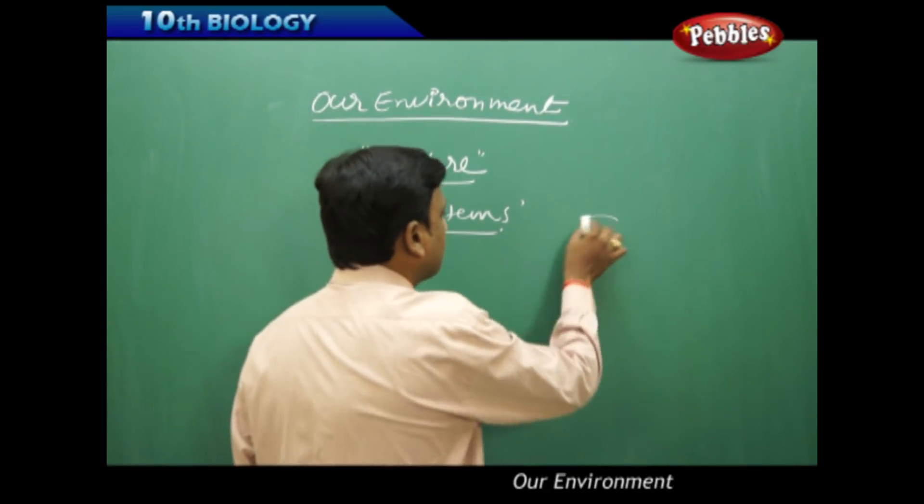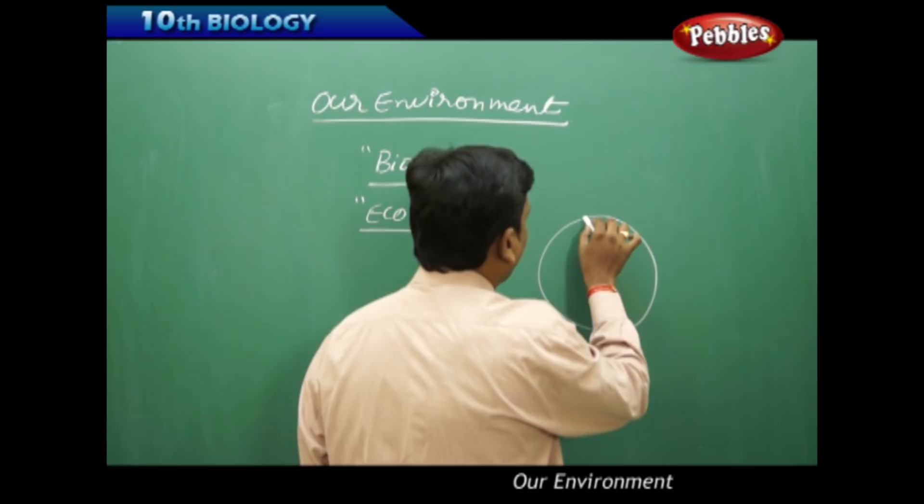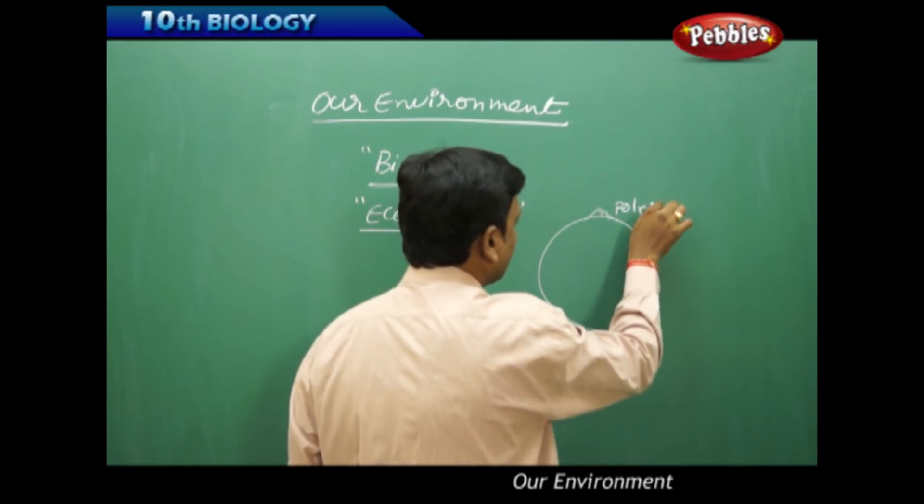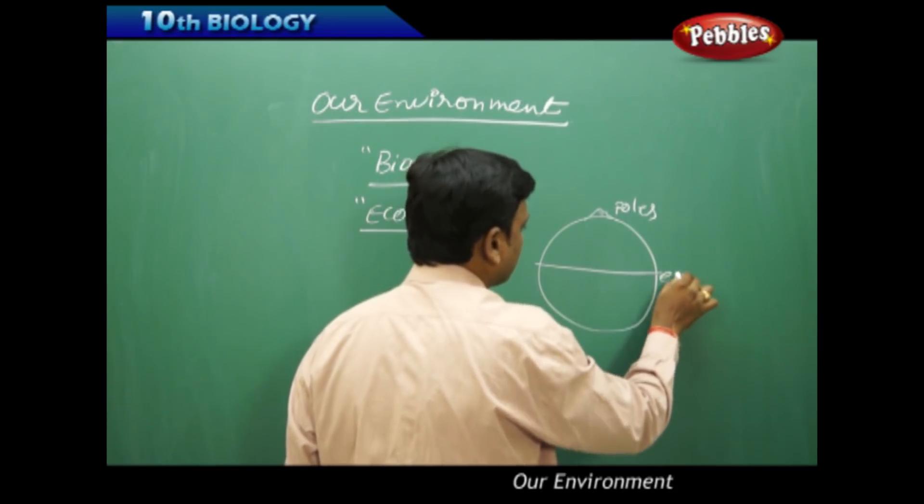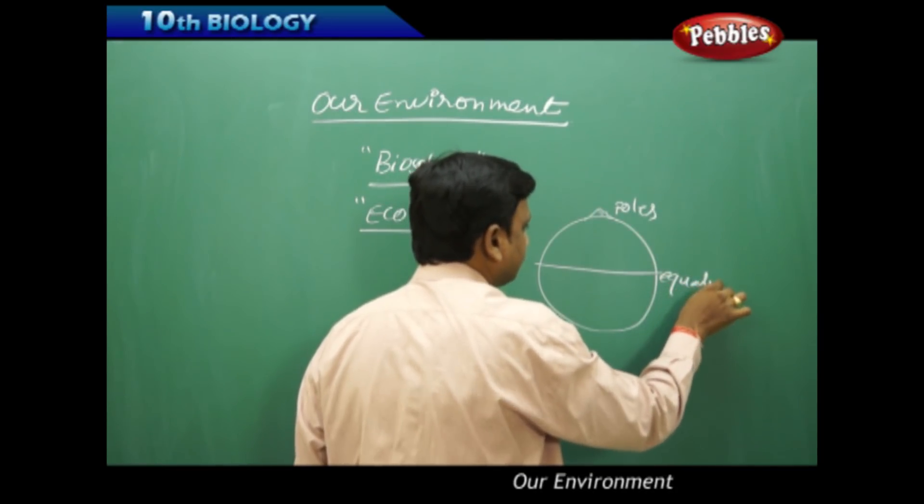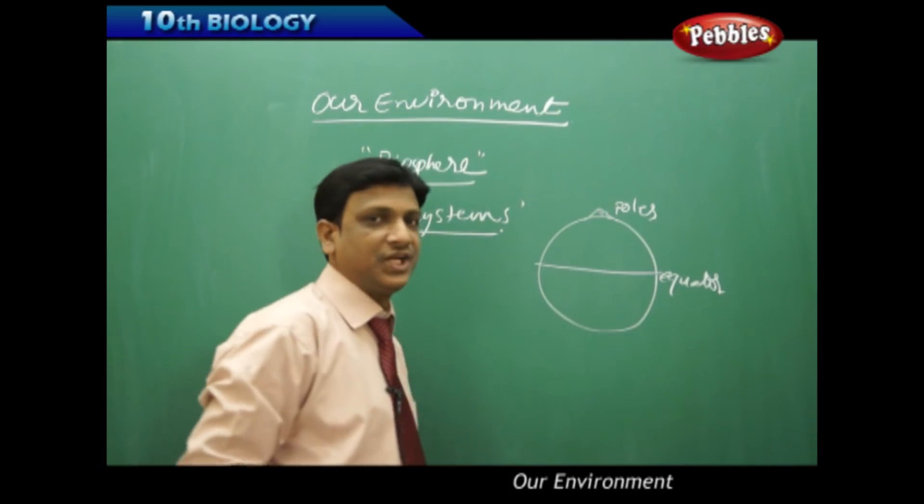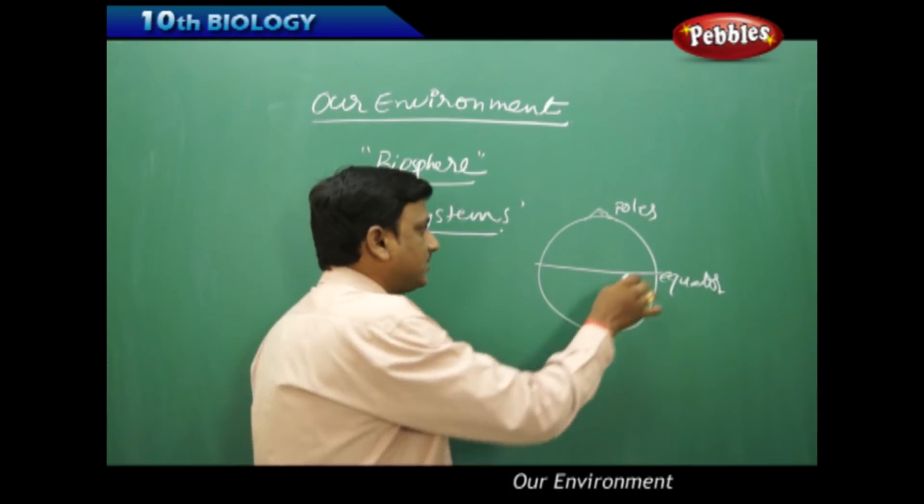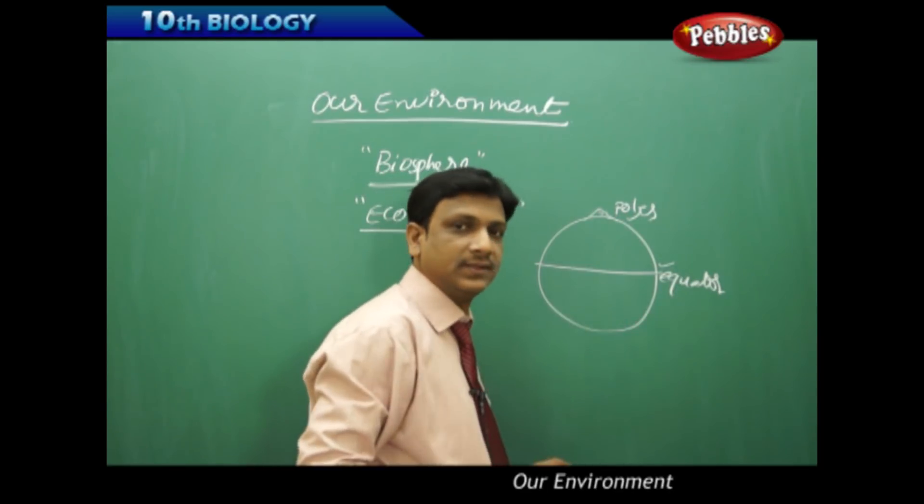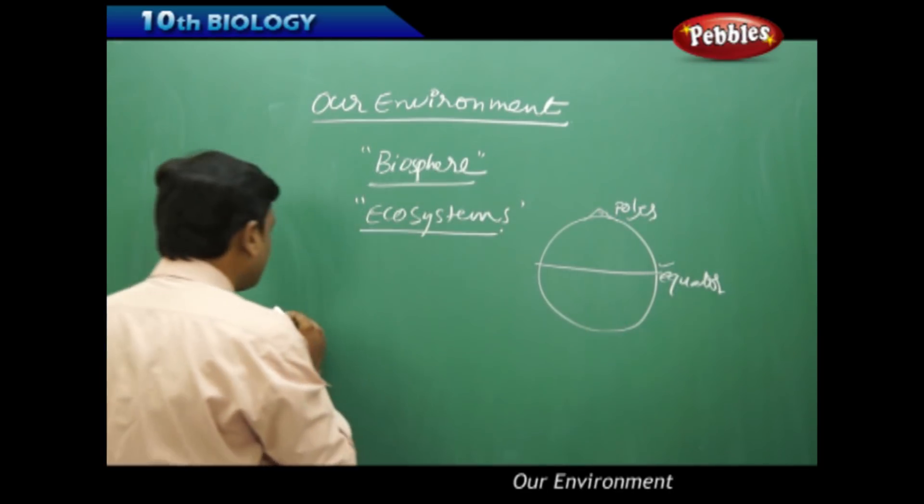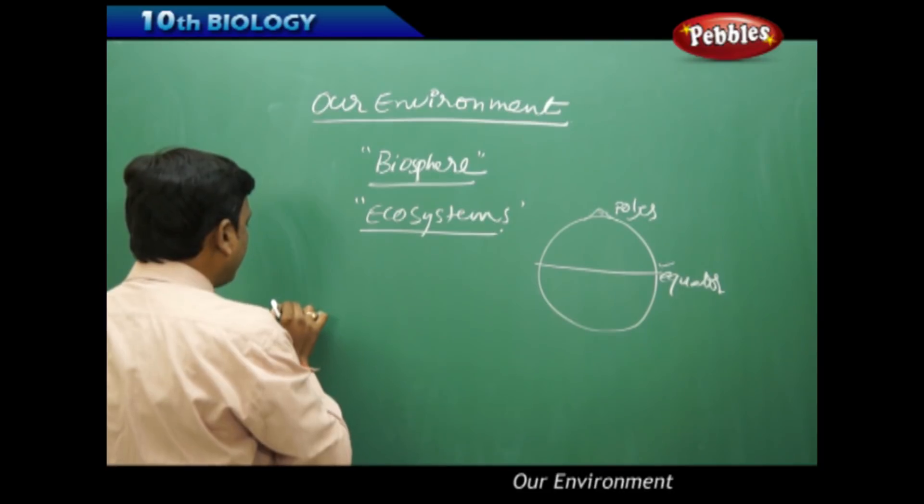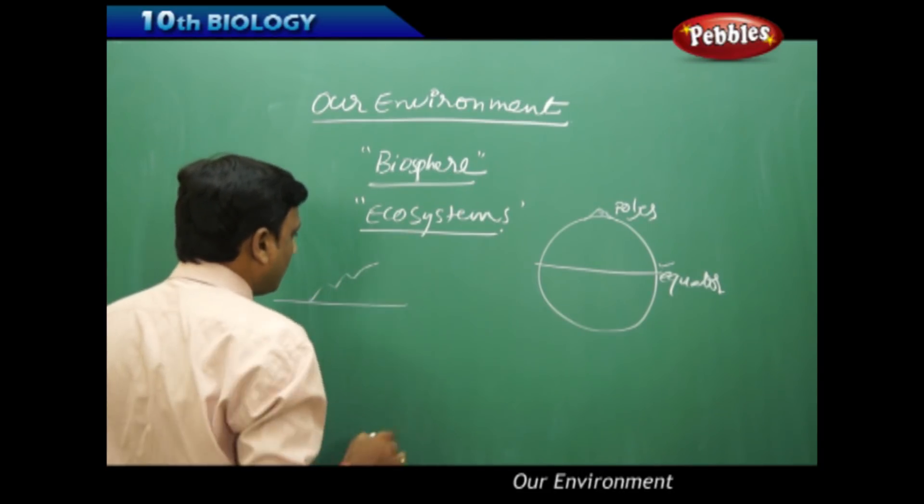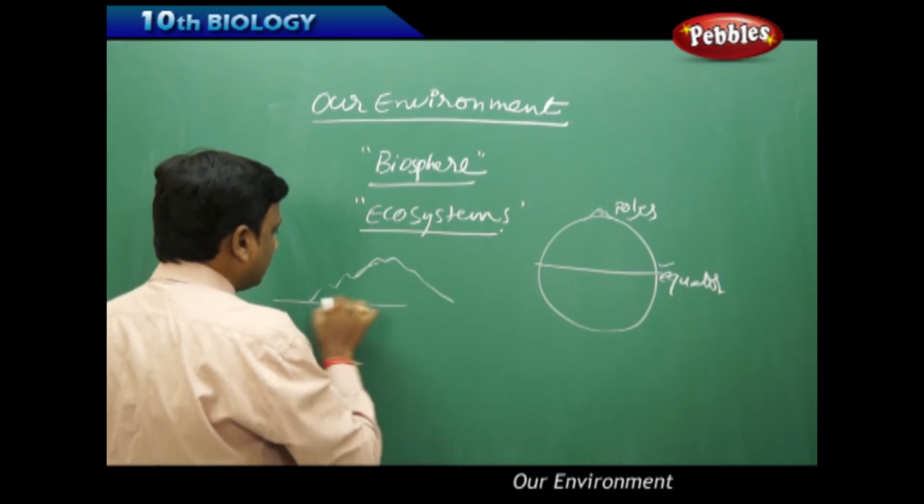Based upon these climatic factors, we observe so many different types of ecosystems in the biosphere. If we observe the globe, here we find a great variation. If you look at the poles and look at the equator, there is a large variation of climatic factors when compared to this equator to the poles.